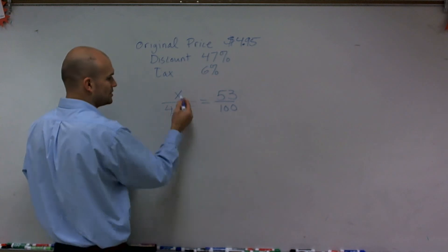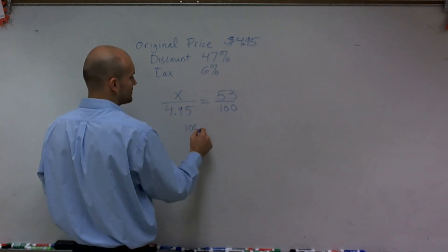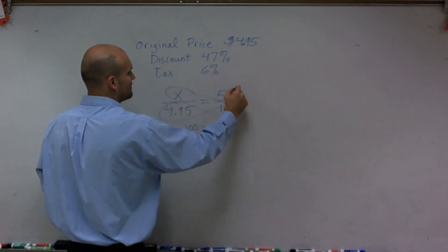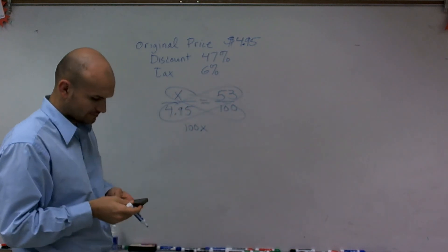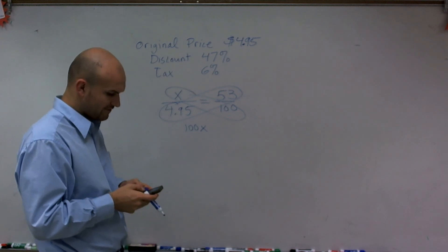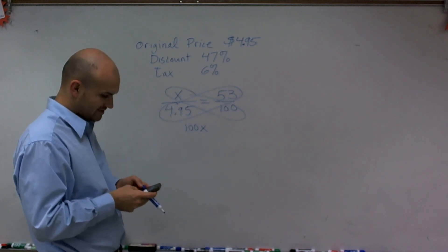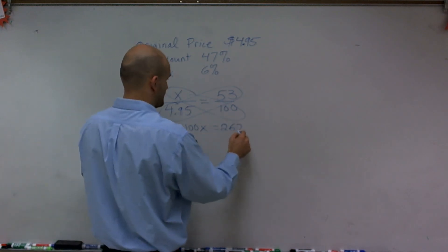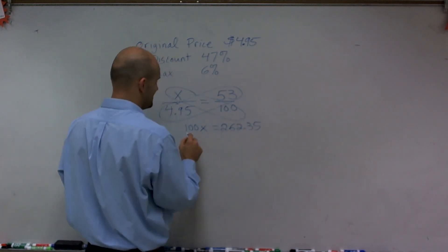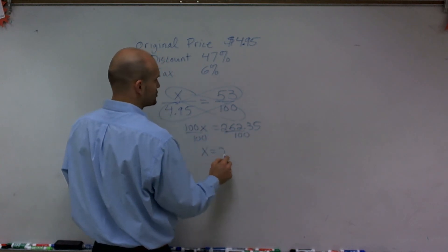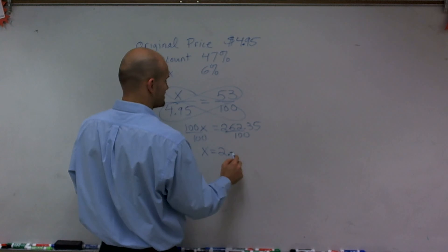Then I can use cross multiplication. I'm going to multiply 100 times X and then 4.95 times 53. When I do that, I get 4.95 times 53 equals 262.35 divided by 100, and X equals $2.62.